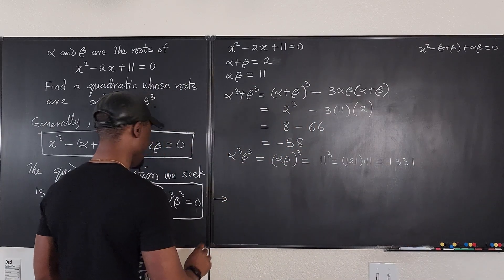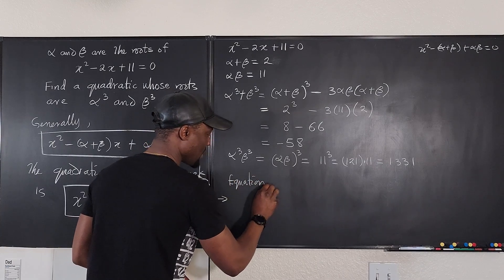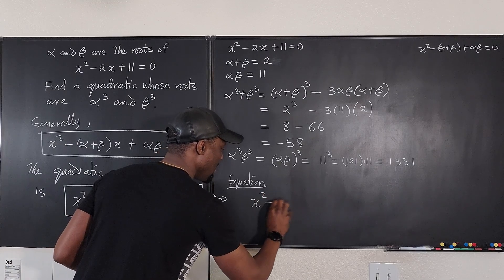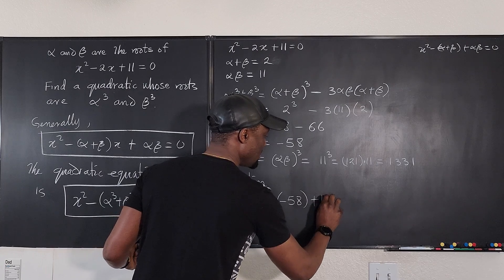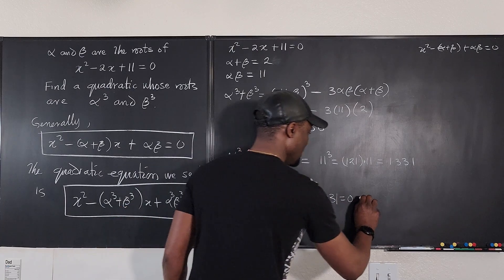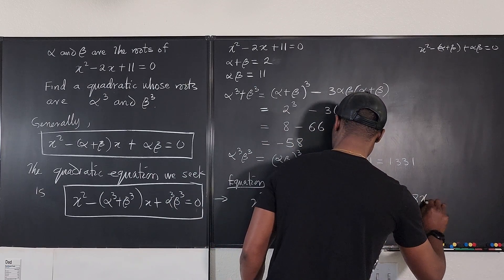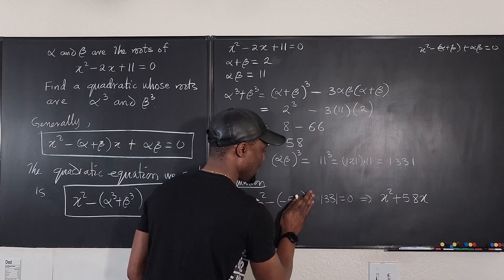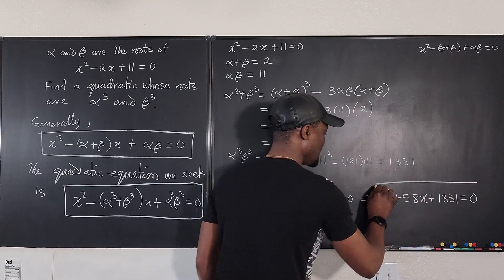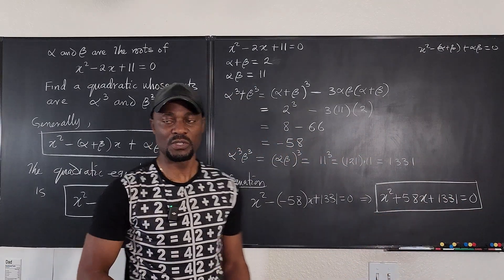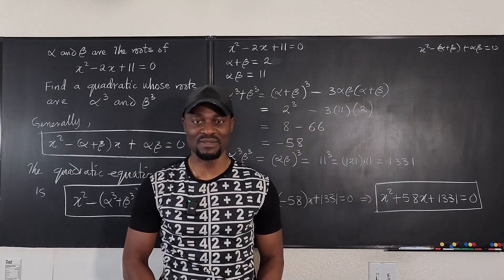So the equation we're looking for is x squared minus (negative 58) times x plus 1331 equals zero, which gives us x squared plus 58x plus 1331 equals zero. This is the quadratic equation whose roots are alpha cubed and beta cubed. Never stop learning — those that stop learning have stopped living. Bye-bye.